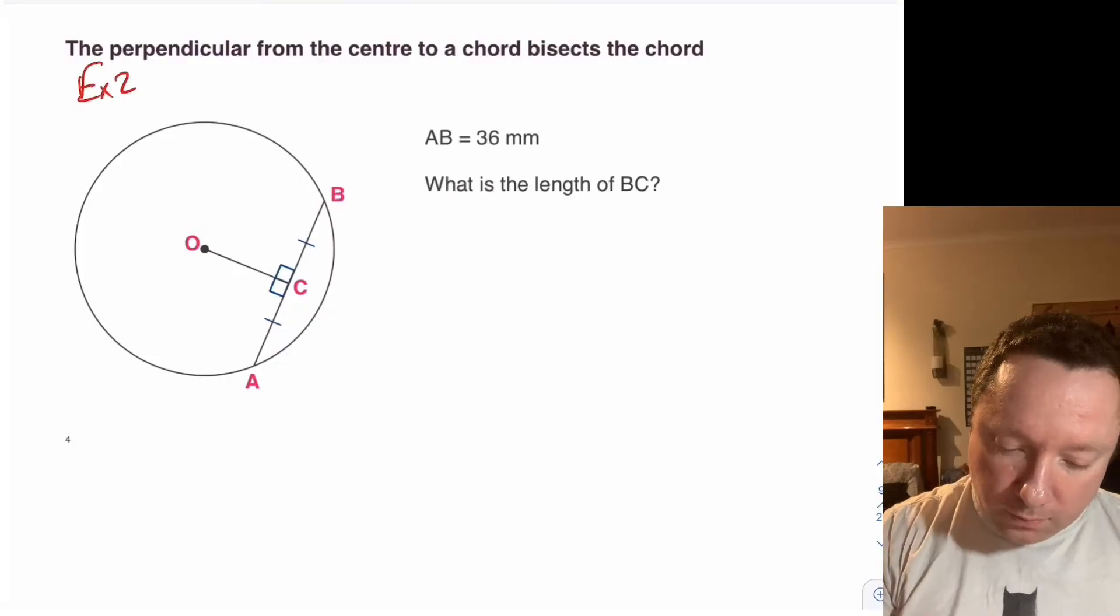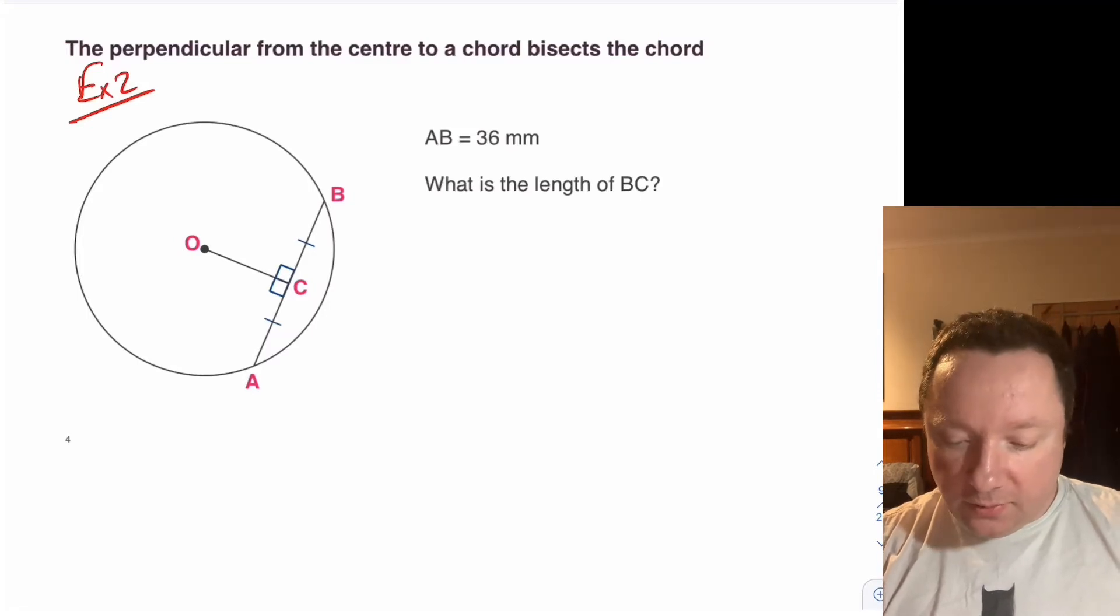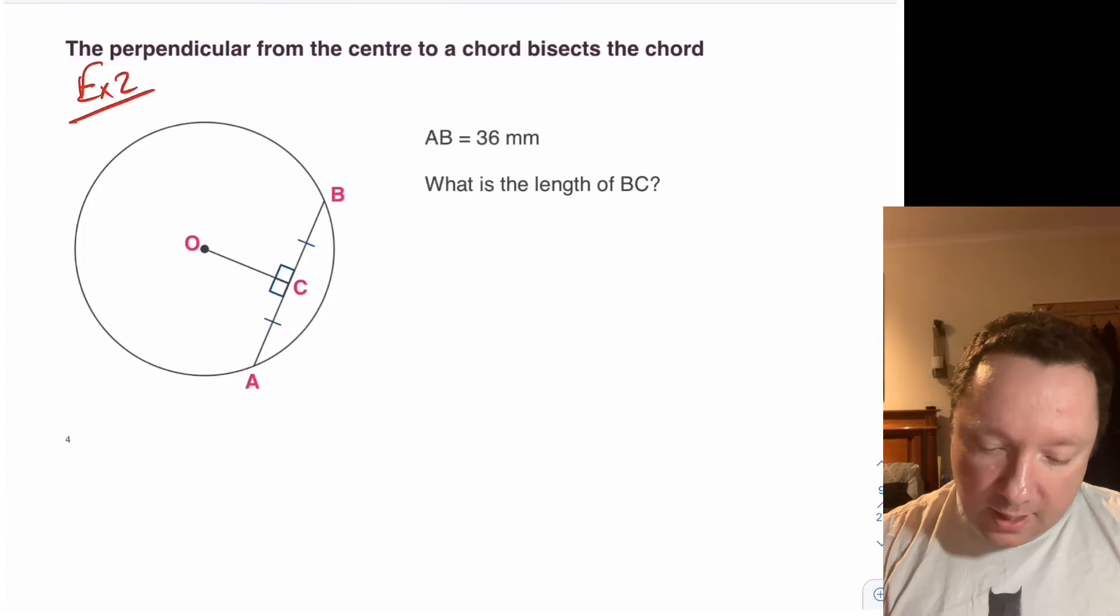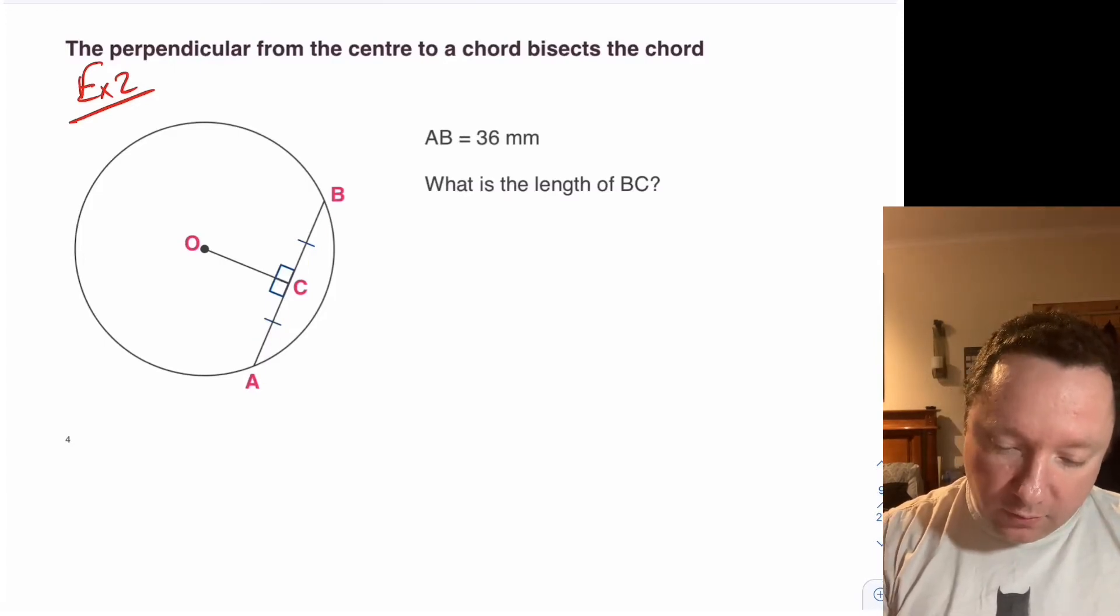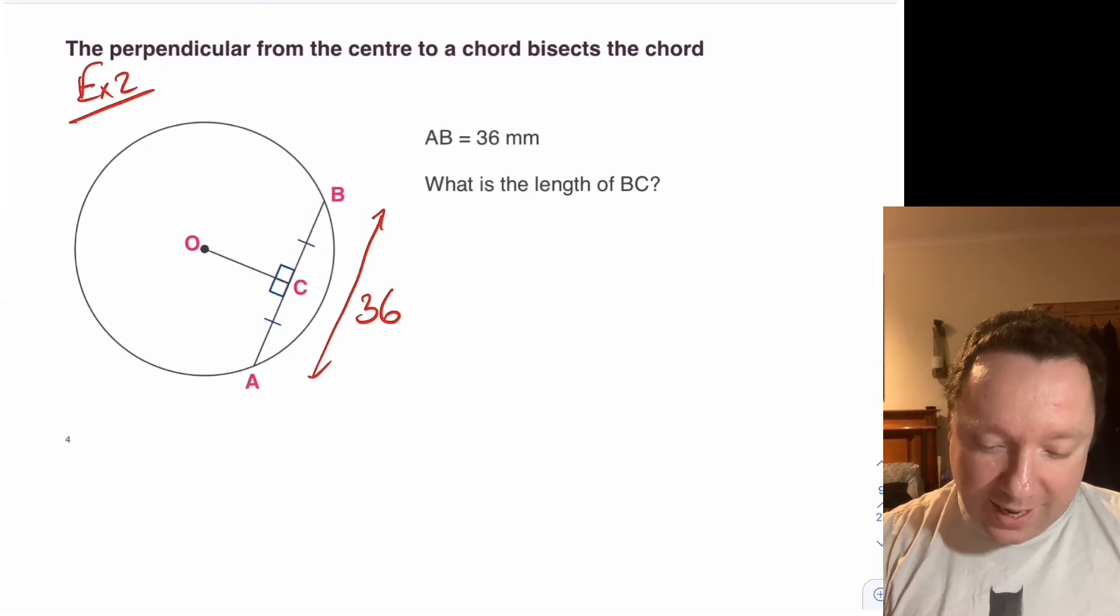So example two. It's asking us that AB is 36, what's the length of BC? So we need to identify our bits. A to B, the whole line is 36. So if I draw a line just to show that whole thing is 36. And it's asking me for B to C, which is the middle to the outside, well that's half.